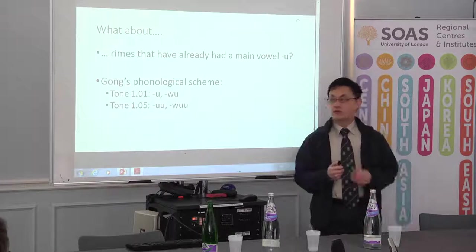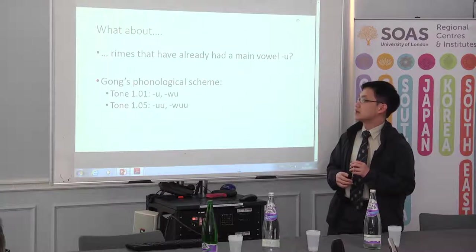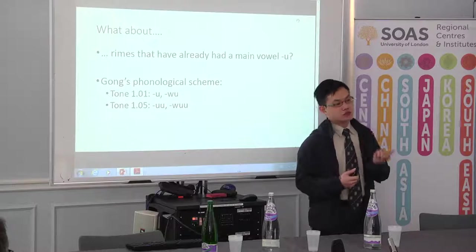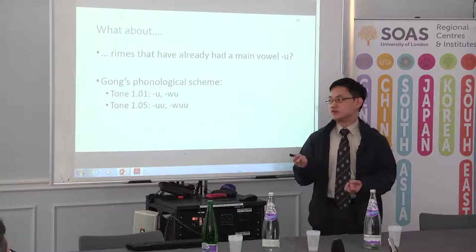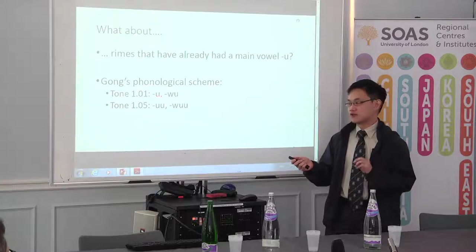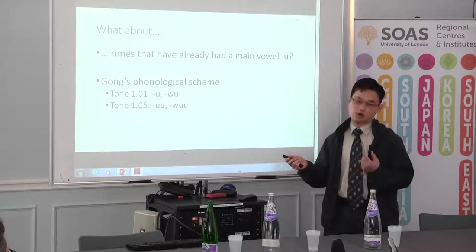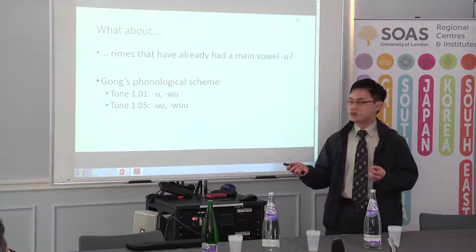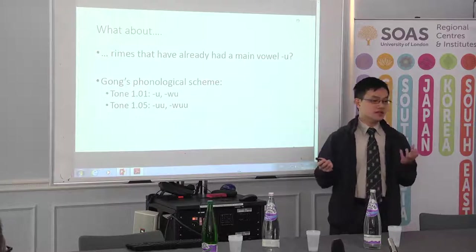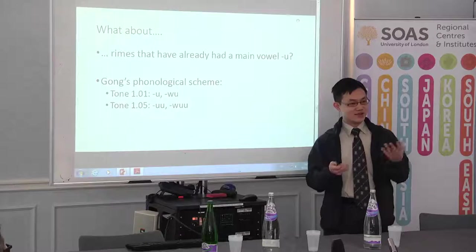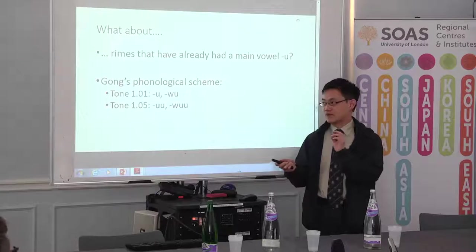But we get another problem. What about the rhymes that have already had a main vowel Wu? The main vowel is already Wu — how can you add another roundness upon a medium Wu? Gong's proposal is that the first cycle for 1.01 has main vowel Wu, and the second cycle is Wu, and for 1.05 the main cycle is Wu and the second cycle is Wu. So what is Wu and Wu? How can you distinguish Wu from Wu? This is quite problematic, and this is why I find it so interesting.